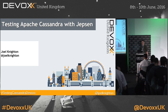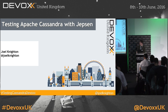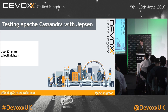Welcome, everyone. Thanks for coming. My name is Joel Knighton, and today I'm going to talk about testing Apache Cassandra with Jepsen and how you can apply those techniques to testing your own systems. You can find me on Twitter at Joel Knighton, or if you use the hashtag testing Cassandra DevOps, I'll give it a look after the talk and answer any questions or comments.